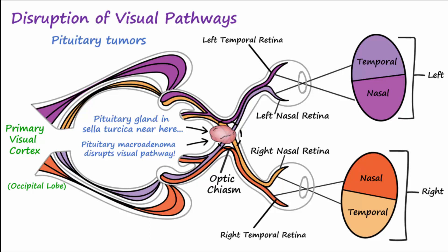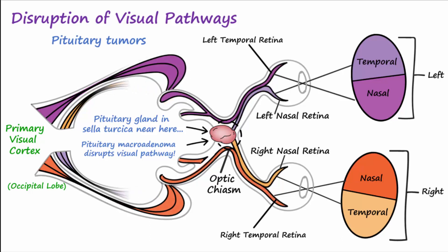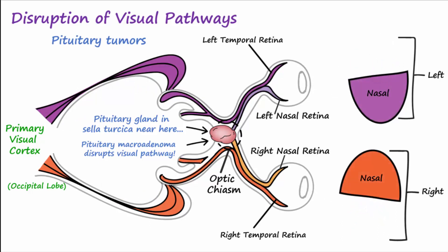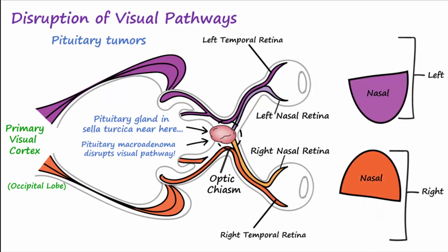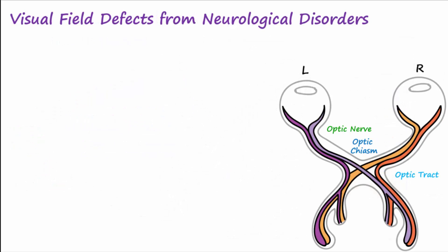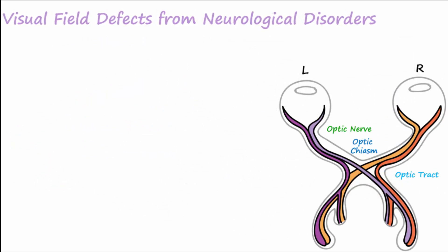Remember that the visual information that crosses over at the chiasm originated from the temporal visual fields of both eyes. So patients with a pituitary tumor may experience a blockage of visual information coming from the temporal visual fields. This temporal visual field blockage leaves just the central visual field, a condition known as tunnel vision, because you just see the center of the visual field.